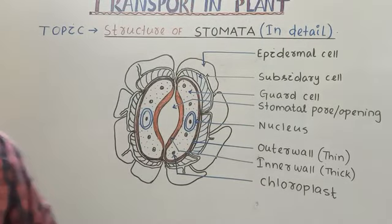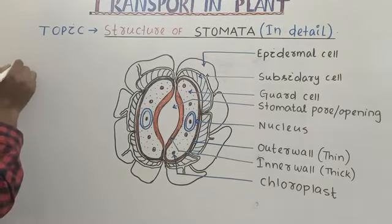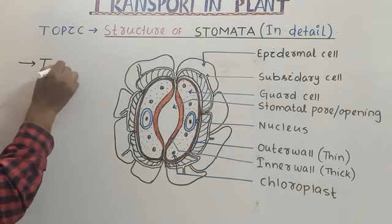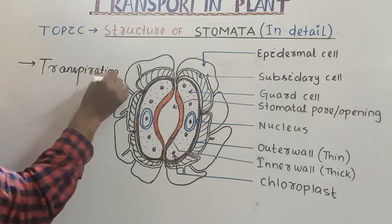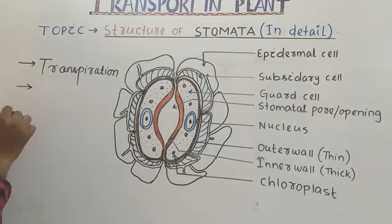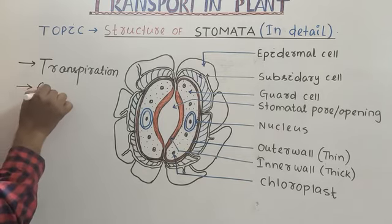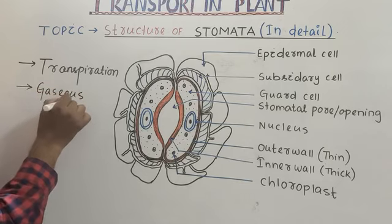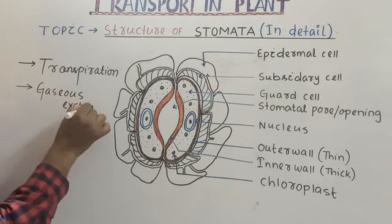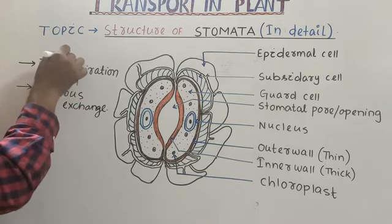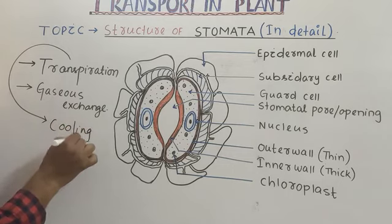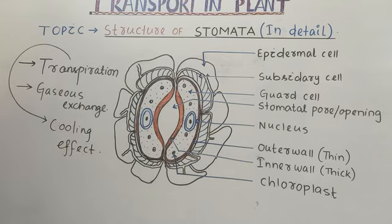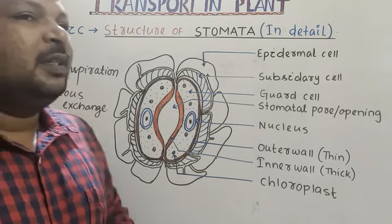Stomata helps in transpiration. The second function is stomata helps in gaseous exchange. Transpiration also provides a cooling effect to the plant.